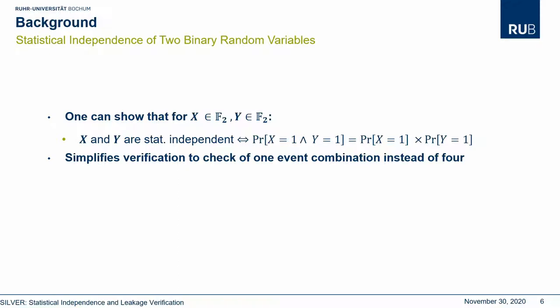More specifically, one can show that if x and y are binary random variables, they are statistically independent if and only if the probability that x takes 1 and y takes 1 is equal to the product of the probability that x takes 1 and the probability that y takes 1. As a result, making this one check instead of all four possible combinations of x and y is already enough to conclude statistical independence of two binary random variables.